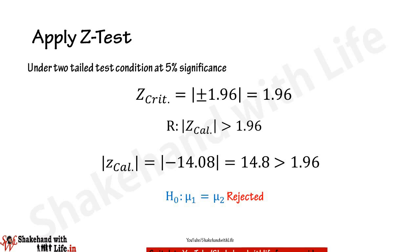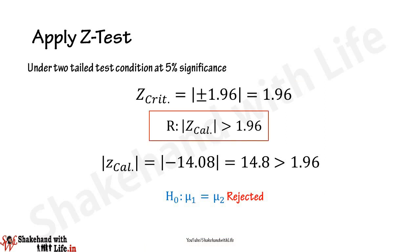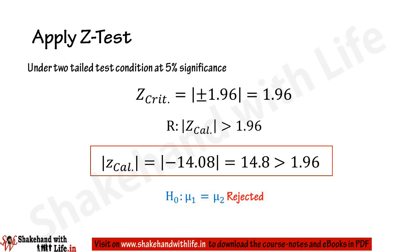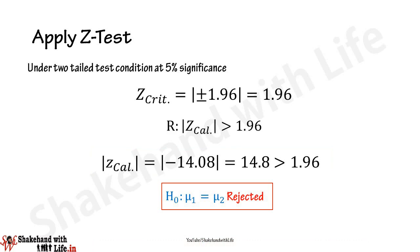Since Hₐ is two-sided, we apply a two-tailed test. The critical values for the Z-test under two-tailed test condition at five percent significance level using the normal curve table are Z = ±1.96. If the absolute value of the calculated Z is greater than 1.96, the null hypothesis will be rejected. Here |Z| = 14.08, which is greater than the critical value of 1.96, hence the null hypothesis is rejected.